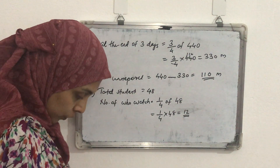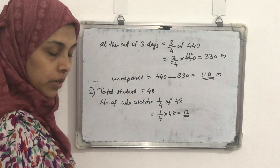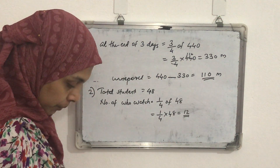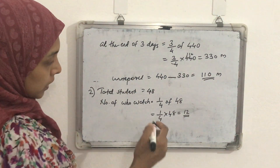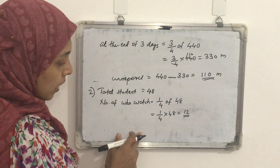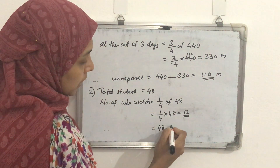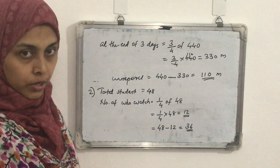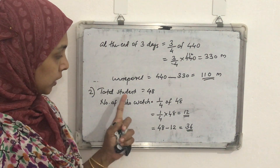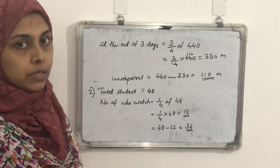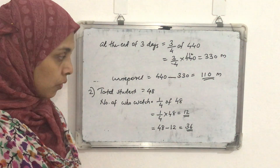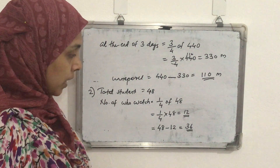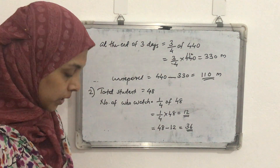Now, how many students do not watch the program? If the total number of students is 48 and 12 students watch the TV program regularly, then the number of students who do not watch the program equals 48 − 12 = 36 students. Copy the steps correctly in your notebook: total students 48, students who watch is 1/4 × 48 = 12, students who do not watch = 48 − 12 = 36.